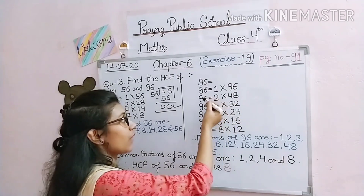Therefore, factors of 96 are: 1, 2, 3, 4, 6, 8, 12, 16, 24, 32, 48, and 96.